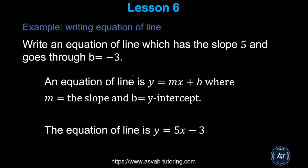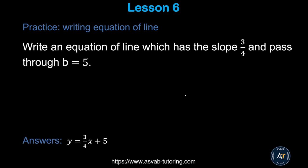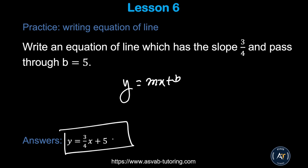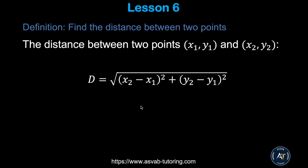Next we'll learn how to write the equation of a line using slope and y-intercept. The equation is y = mx + b, where m is the slope and b is the y-intercept. Plugging in slope m = 5 and b = −3 gives y = 5x − 3. Try the practice problem yourself and make sure you get y = (3/4)x + 5.